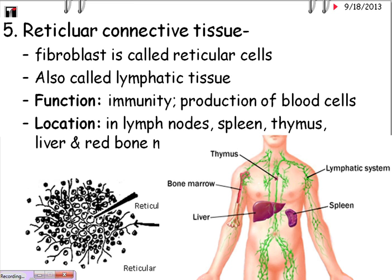Please continue on with part two of connective tissue, where we will cover some of the not-so-ordinary connective tissue types, including cartilage and the types of cartilage, bone, and blood. Thank you.